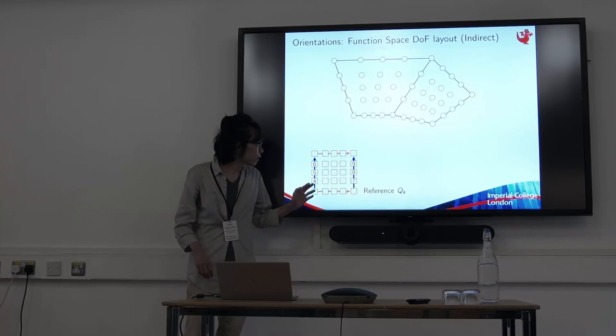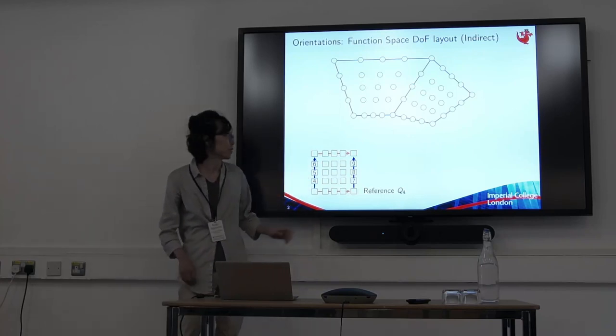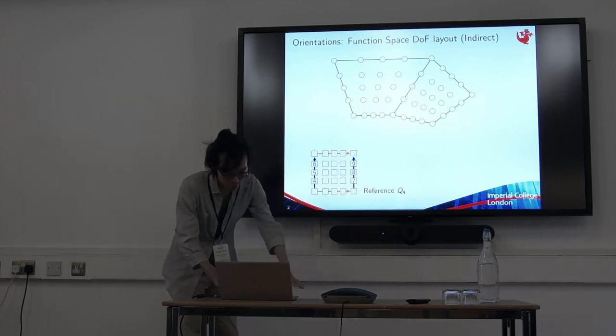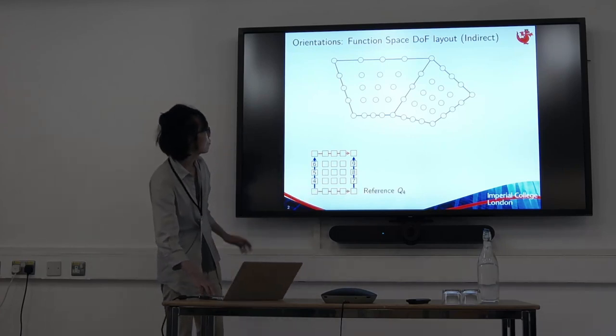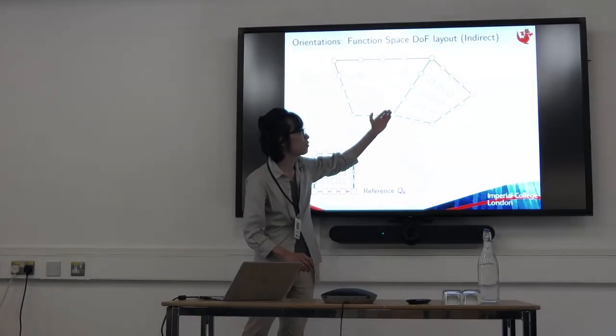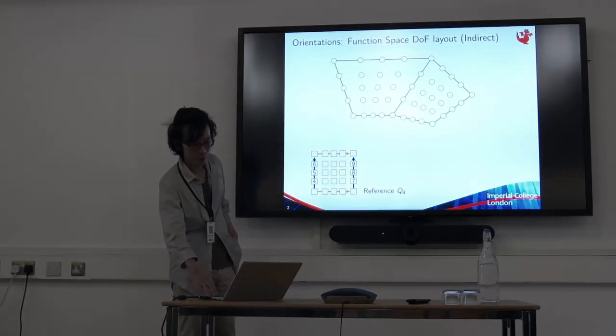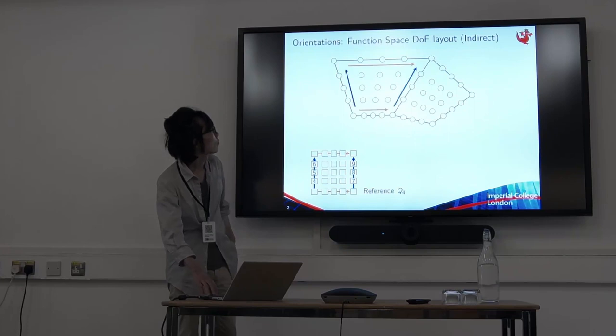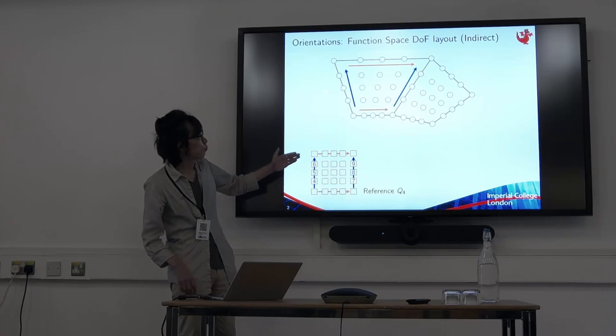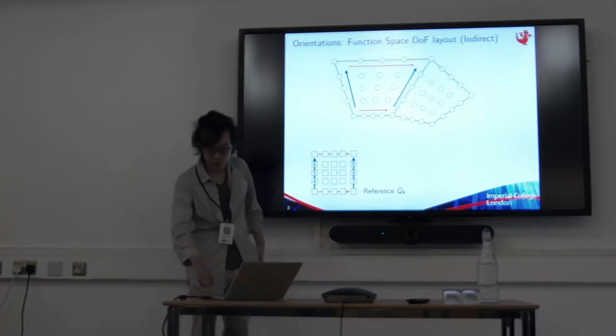We only focus on edges because this is where things become interesting. The question we want to ask is, we have global dots here, how do we order global dots on the mesh edges? This is what FireDrake conventionally does. We come up with some mapping from the reference element to the physical element and we let mesh edges inherit orientation.